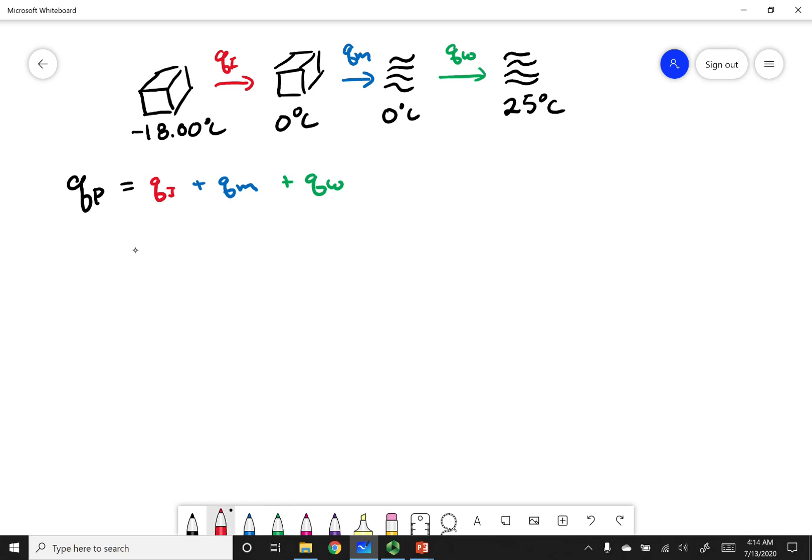So let's go ahead and evaluate each one of these. So to heat up ice, I'm going to use MC delta T, where each one of these should be with respect to ice. For melting my ice, I'm going to use the heat of fusion. Now note that the heat of fusion is given in kilojoules per mole. So I want to go ahead and make sure I times this by moles. And lastly, to heat up my water, I'm going to use MC delta T.